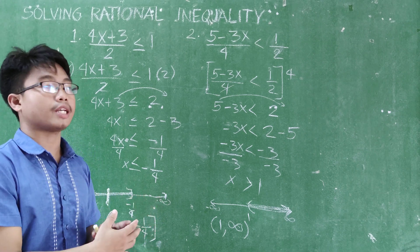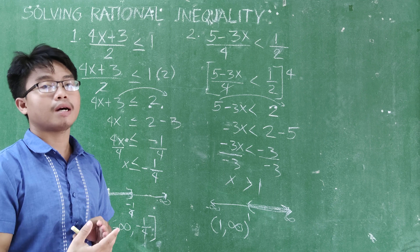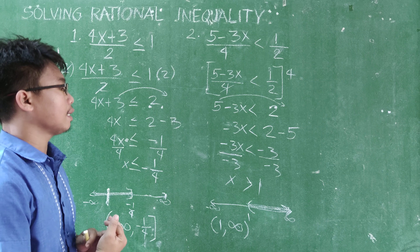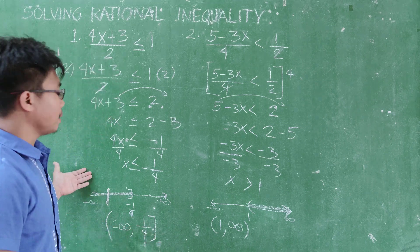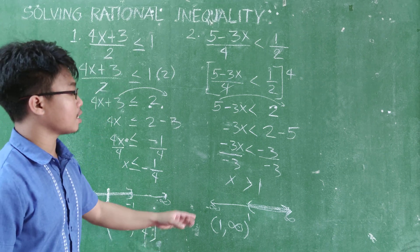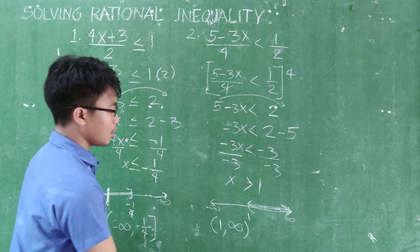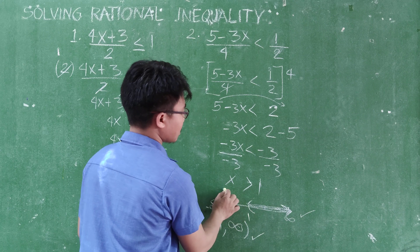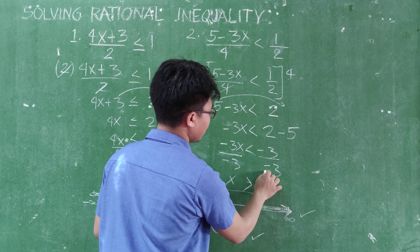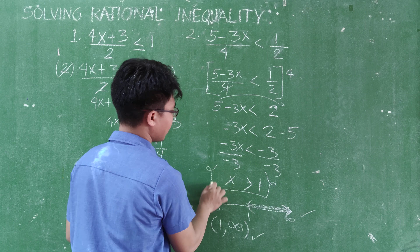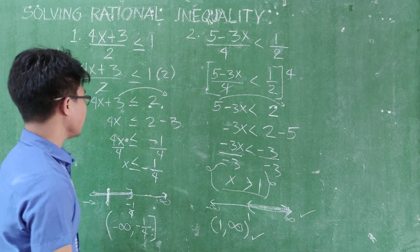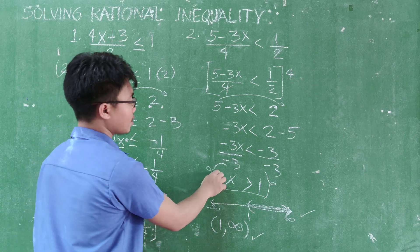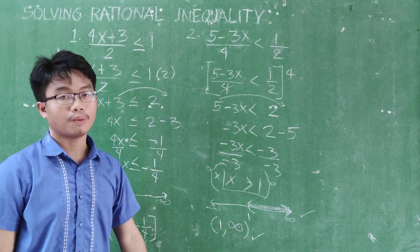And please be reminded by these three types of solution. So this is interval notation, this is using the graph, and this is the solution set, where you can put a bracket here. So this can be an answer. Okay, so values of x greater than 1.